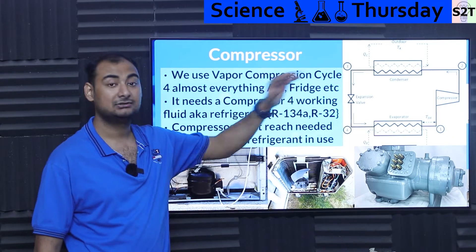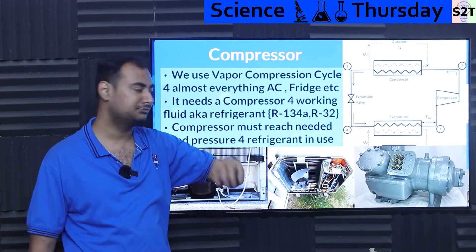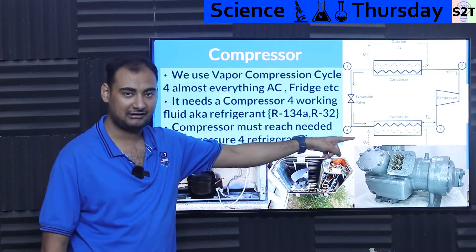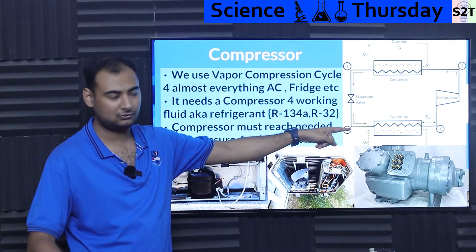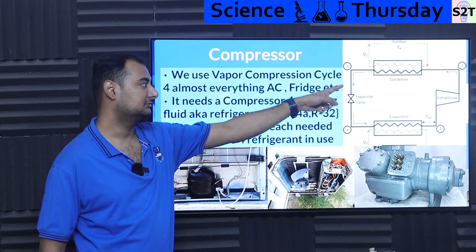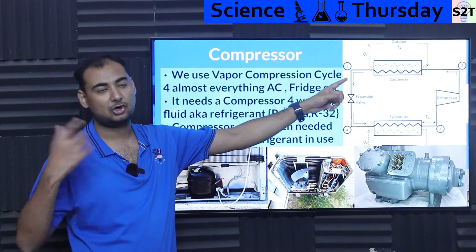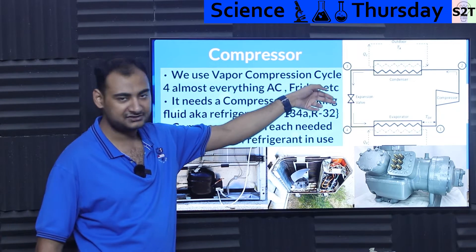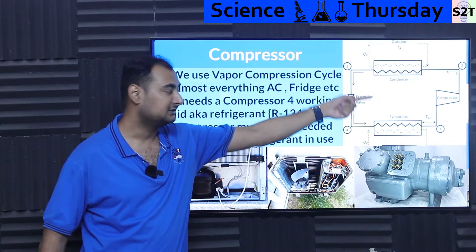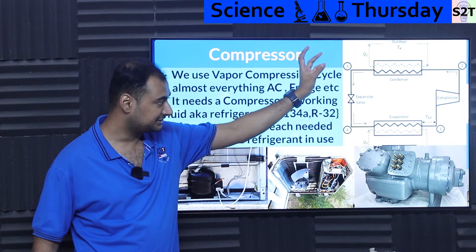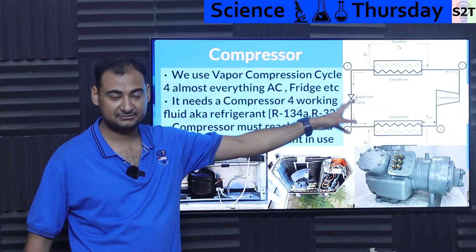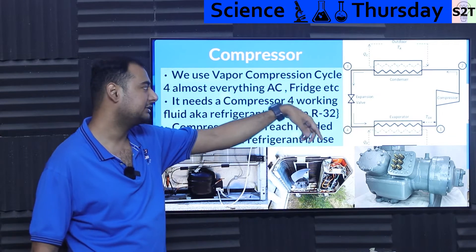This system has four core components. One, you have an evaporator that gets cold; a condenser that gets hot; an expansion valve; and a compressor. Now the compressor is the heart of the system — it's the active component.